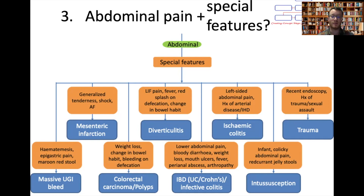Inflammatory bowel and infective diseases are mainly teased out through the history. Infective disorders might present with bloody diarrhoea. With inflammatory conditions there might be an acute-on-chronic presentation — weight loss, mouth ulcers in Crohn's, and possibly arthropathy or syndrome-related disorders such as uveitis and iritis. Ischaemic colitis should be considered in any patient with a history of arterial disease or ischaemic heart disease.